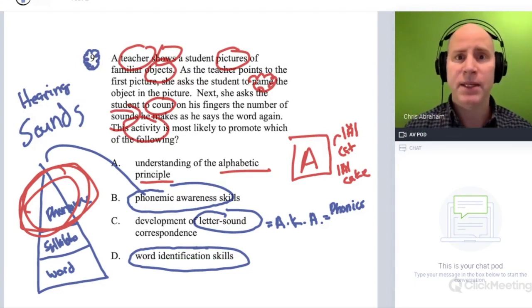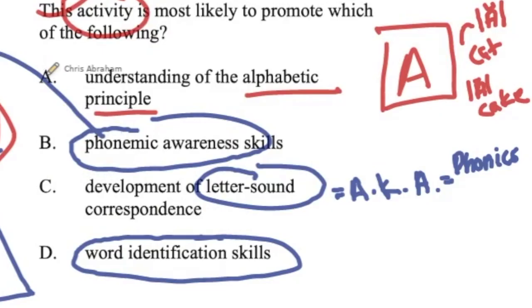So let's take a second look at A, B, C, and D. A is the alphabetic principle, and that has to do with matching up print with the predictable sounds. It's got to have that print, and this activity doesn't have print. We could cross it out. What about C? C has to do with letter-sound correspondence, and letters are print. We're doing an activity with no print. We could cross that out too.